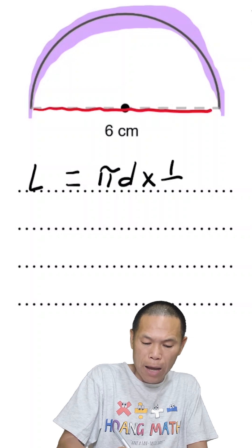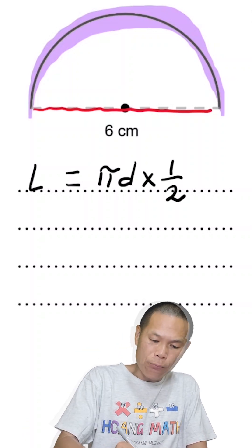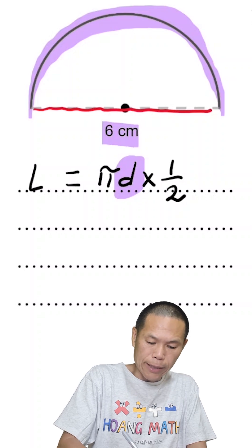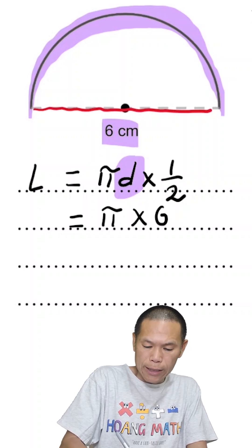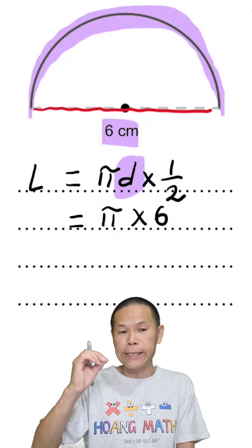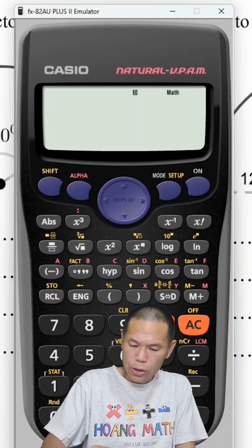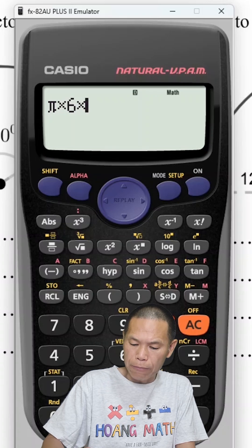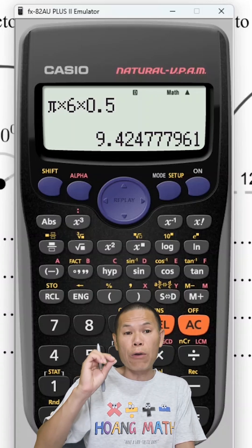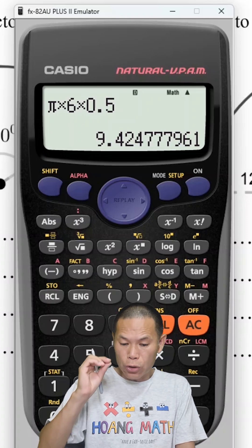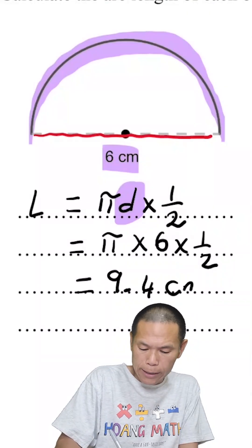Since we only need half of it, we multiply by a half, or divide by two. The diameter here is six centimeters, so that is π × 6 × ½ — or times 0.5. Rounding to one decimal place gives us 9.4 centimeters.